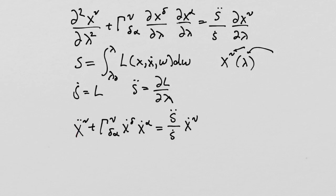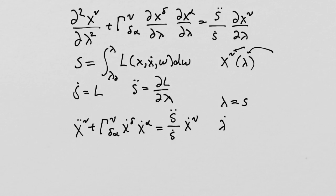This does not necessarily insist that it's the proper time. In fact, it can't be because the proper time is an affine parameter, and as long as there's a term over here, we know the parameterization of this geodesic is not going to be affine — because if it was, this would be zero. But we can make it zero by choosing lambda to equal the path length. By choosing lambda equal to s, s-dot equals one, s-double-dot equals zero, and then this whole side does equal zero. That's where we left off last week.